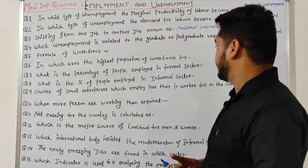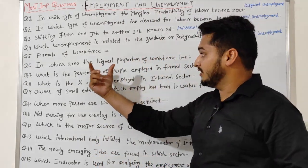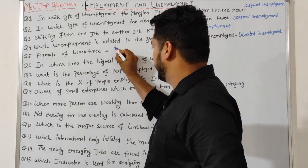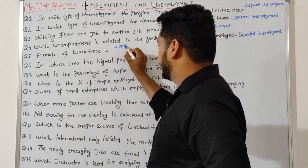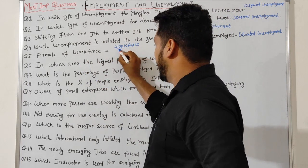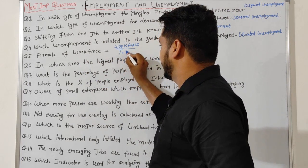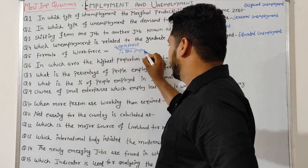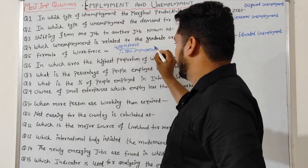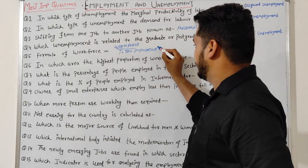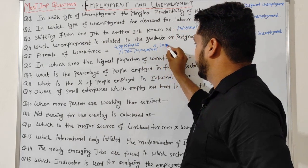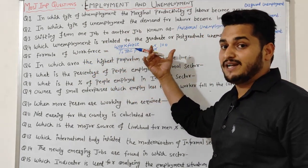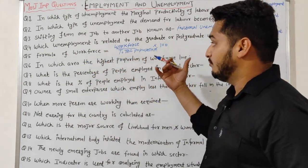Question 5: What is the formula for workforce? The formula is: Workforce Rate = (Workforce ÷ Total Population) × 100. This is a very important formula.